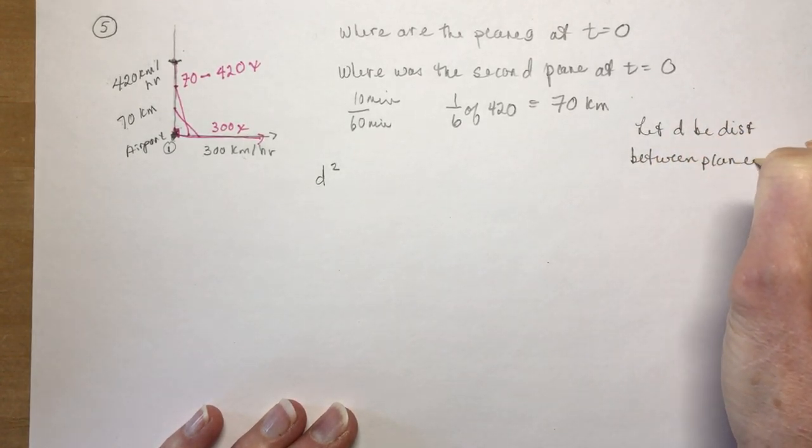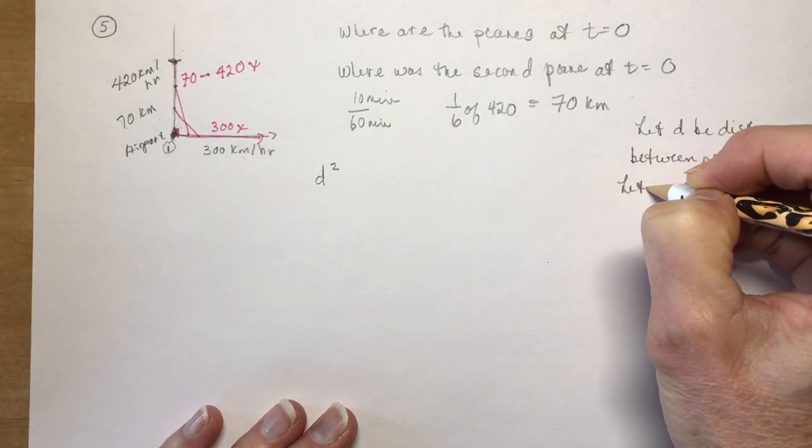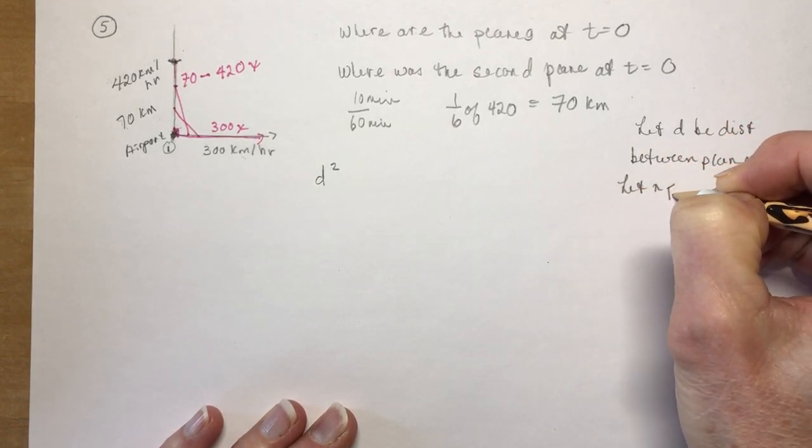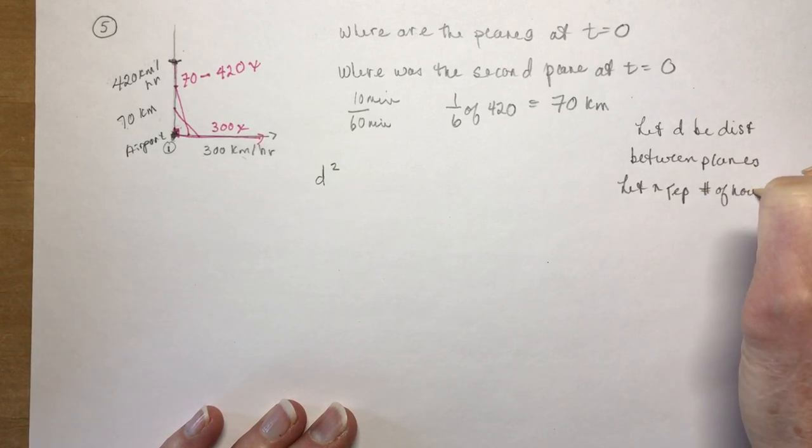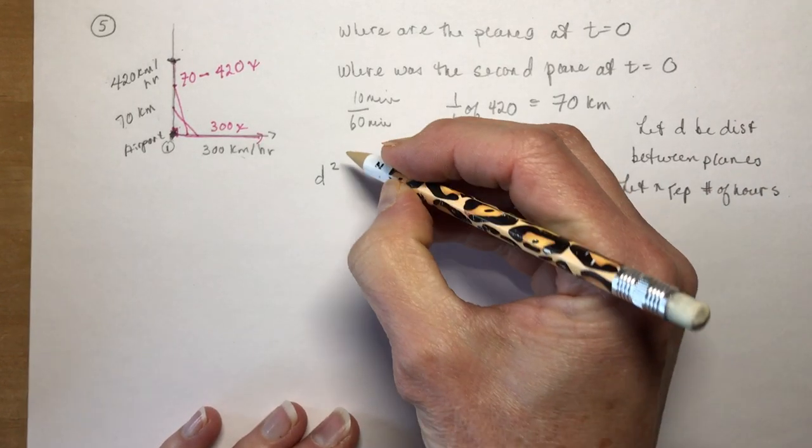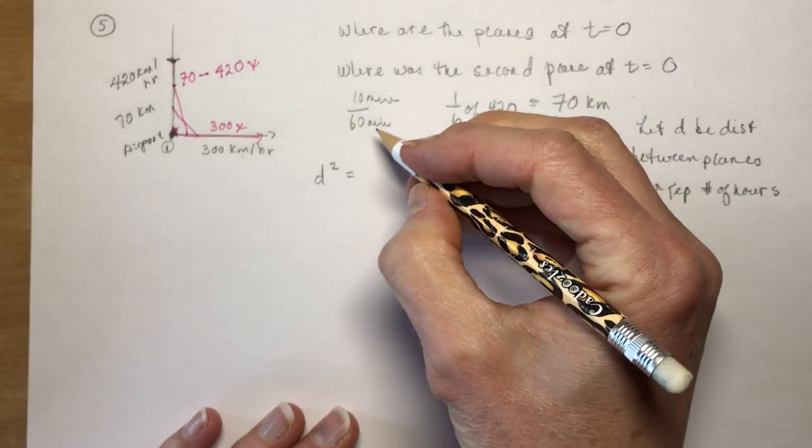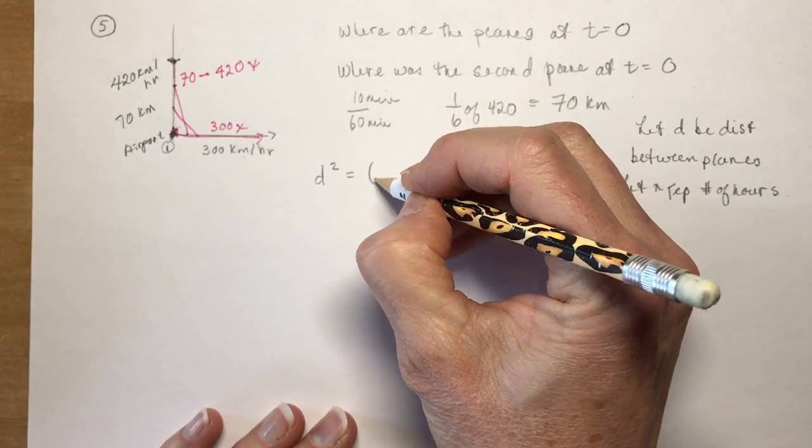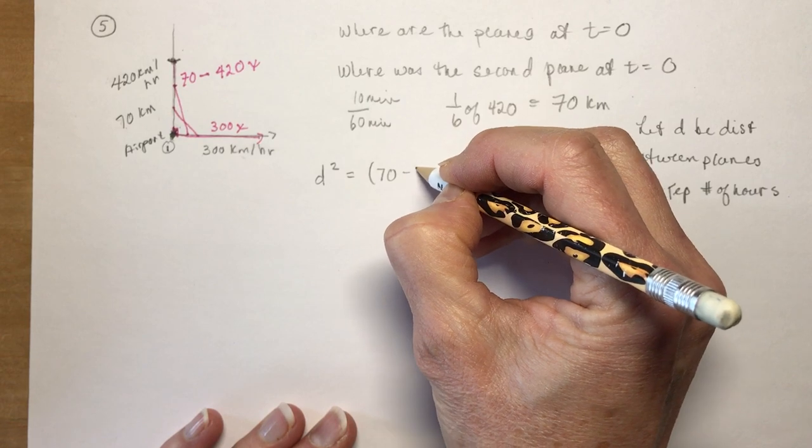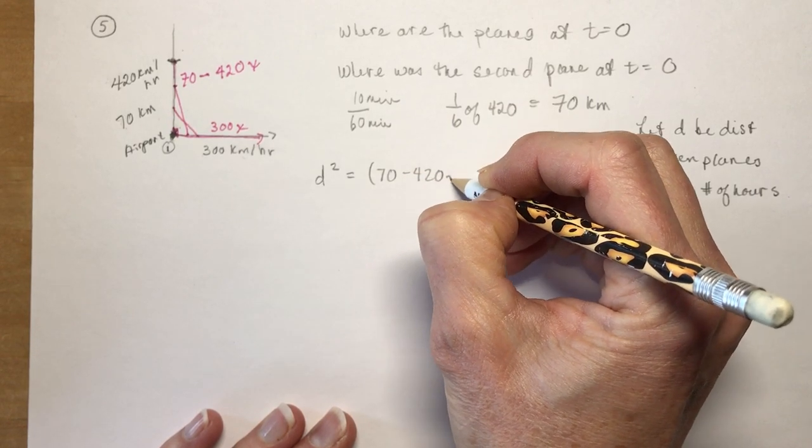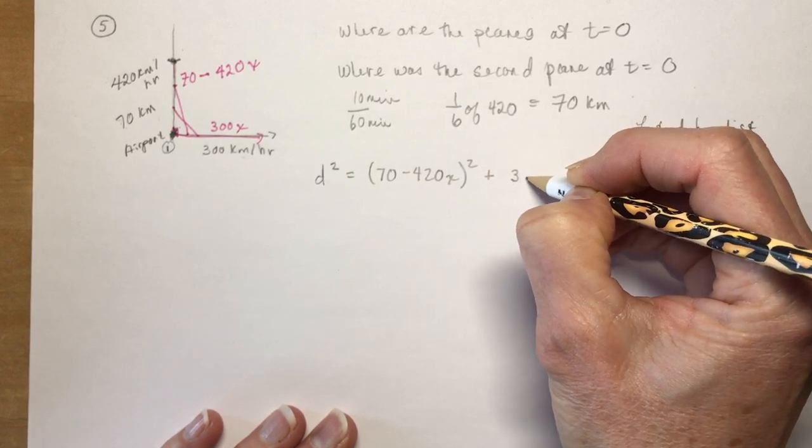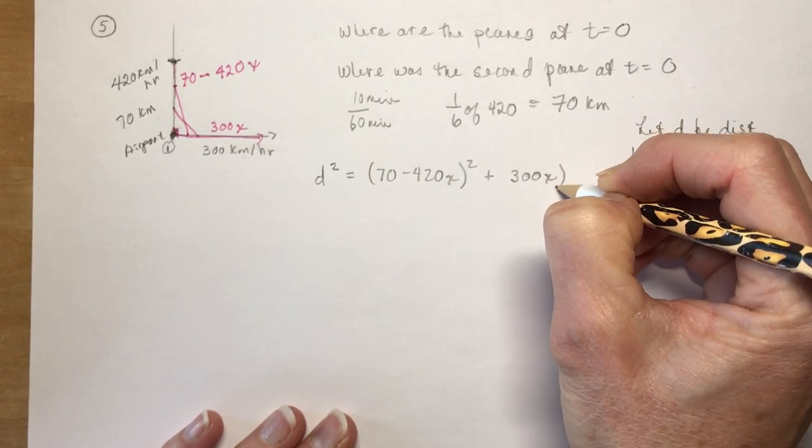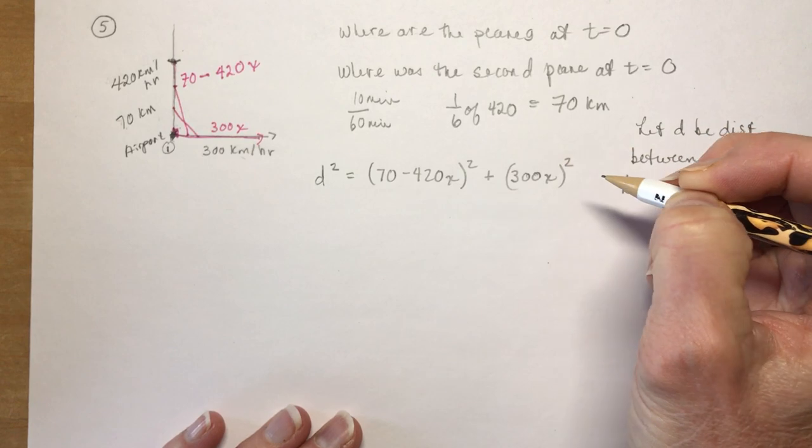And let x represent number of hours. Okay so I say d squared is going to be equal to, and so it's going to be the square of each of those: (70 minus 420x) squared plus (300x) in brackets, don't forget, squared.